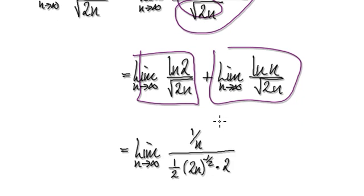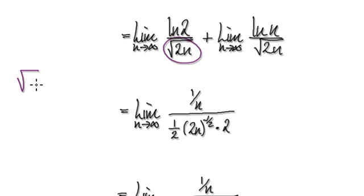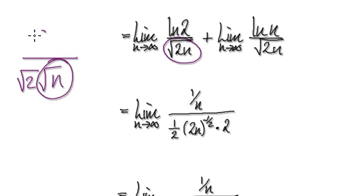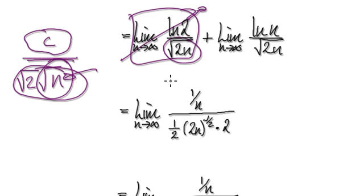This here is just a constant. You can visualize this as root 2 times root n. Root n is just going to get bigger and bigger. So you've got a constant divided by something that gets very, very big eventually, and this whole thing here will head towards zero.